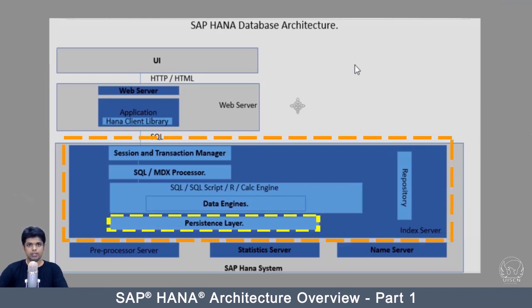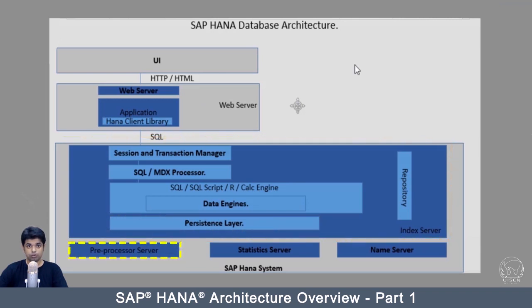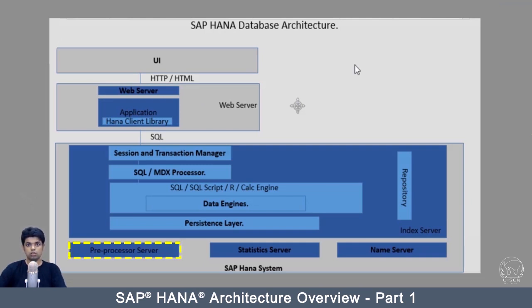The next part in the index server is the preprocessor server. When a text search capability is invoked, the preprocessor server processes the text information and retrieves it from the database table. The preprocessor server is used for text data analysis.